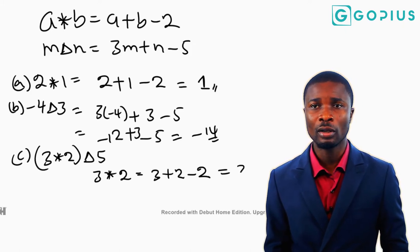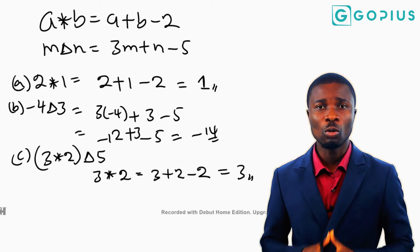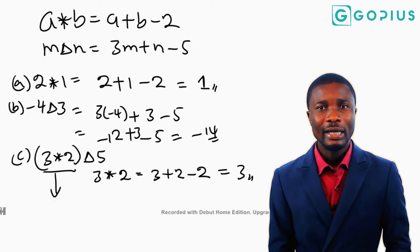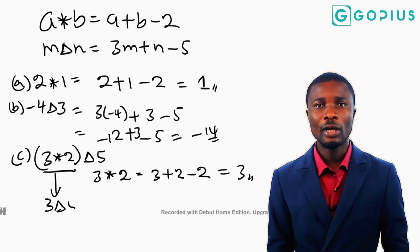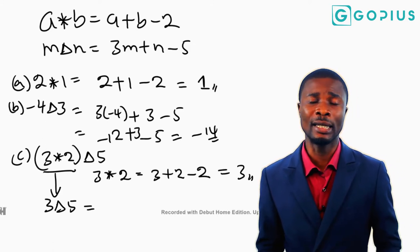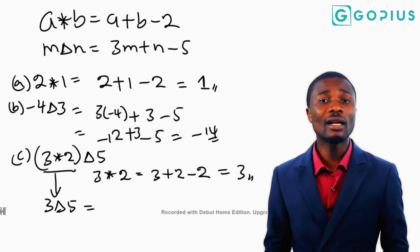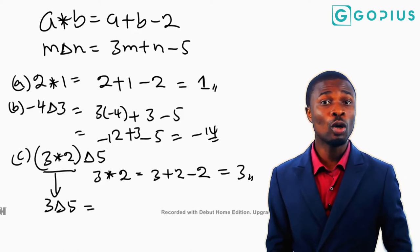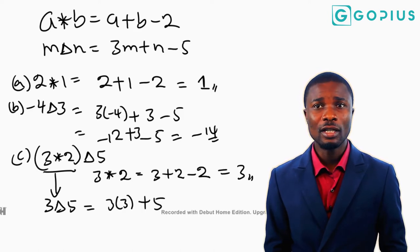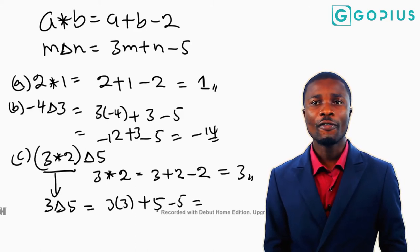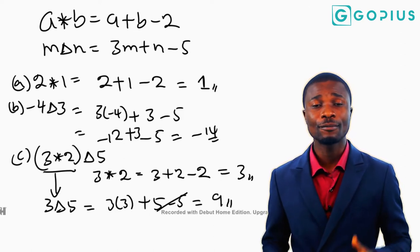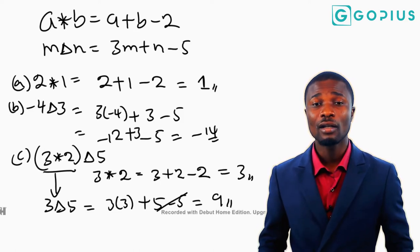3 plus 2 is 5 minus 2 gives us 3. So 3 star 2 equals 3. Now we evaluate 3 delta 5 using m delta n equals 3m plus n minus 5. We get 3 times 3 plus 5 minus 5. The 5 minus 5 cancels, leaving just 3 times 3, which equals 9. So (3 star 2) delta 5 equals 9.